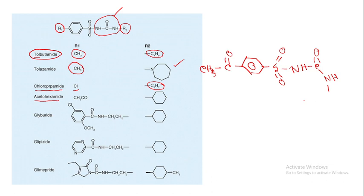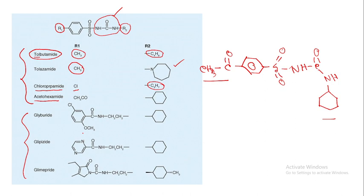This completes the first generation sulfonyl urea anti-diabetic agents. For the second generation, the R1 group structure is very important for potassium channel interaction, and the potency is more than 100 times greater. The first second-generation drug is glyburide, which contains a cyclohexyl ring. Glimepiride also contains a cyclohexyl ring in the middle position, but the R1 group has a very complex structure.